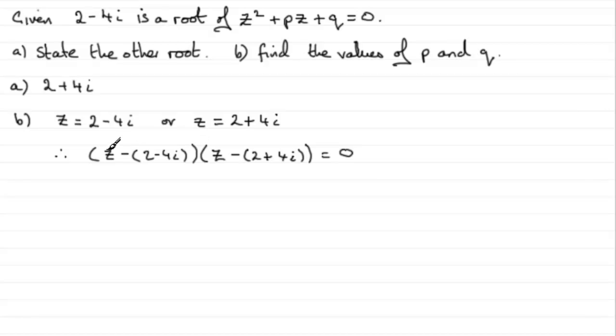So all we need to do now is just expand this, and then what I'm going to do is compare it to this result. So if I expand this, what I've got is z times the z here, so I'm going to have therefore z squared, and then I've got z times this minus 2 plus 4i, so that's going to be minus z multiplied by 2 plus 4i.